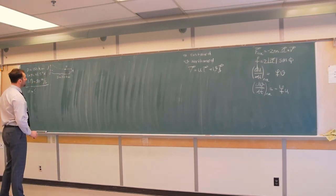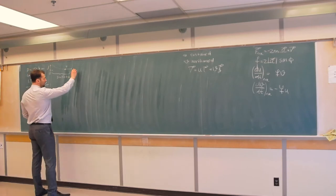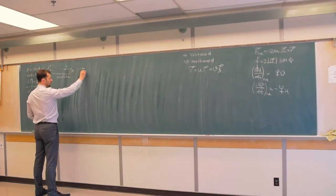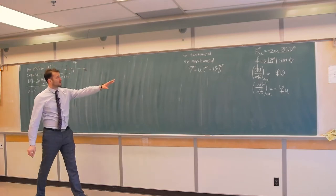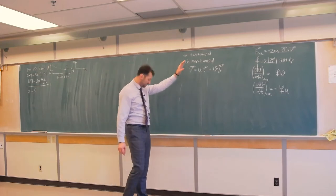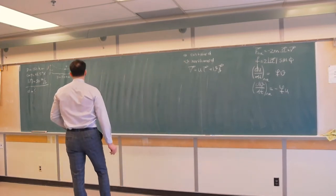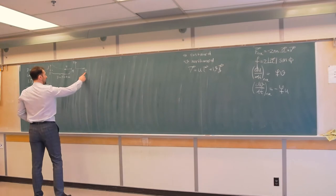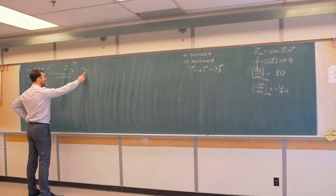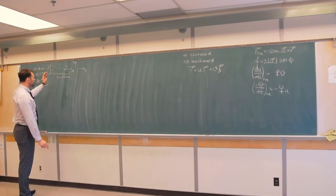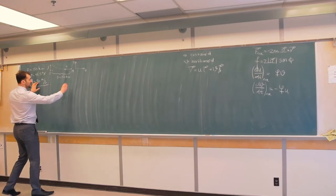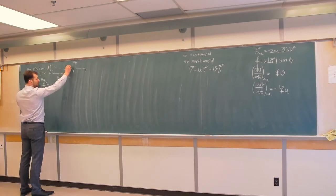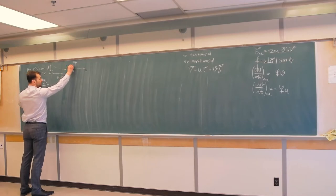Now it is very important to realize something here. If we are taking a right-handed coordinate system, then this is positive U, and this is positive Y. So positive U is eastward, but this parcel of air is moving westward, which means that this velocity is negative. So U is actually negative 50 meters per second.